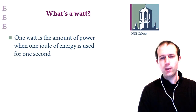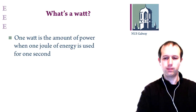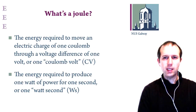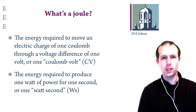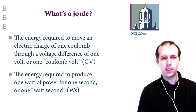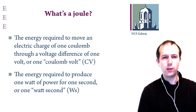What's a watt? It's the amount of power when one joule of energy is used for one second. There is a big relationship between watts and joules: one watt is one joule used per second. In electrical terms, a joule is the energy required to move one coulomb through a voltage difference of one volt.